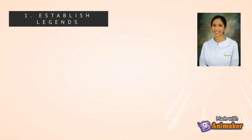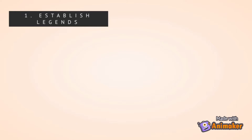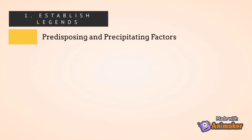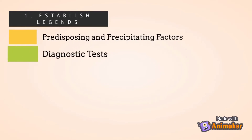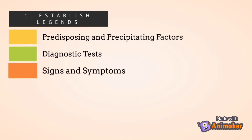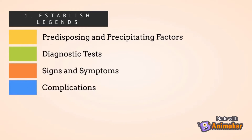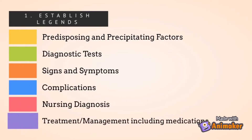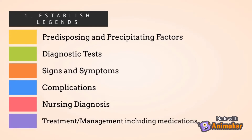In making the pathophysiology, we have to first establish legends — assigning colors to each correlated factor. The predisposing and precipitating factors can be yellow, diagnostic tests as green, signs and symptoms as orange, complications as blue, nursing diagnosis as pink, and treatment including medications can be purple.